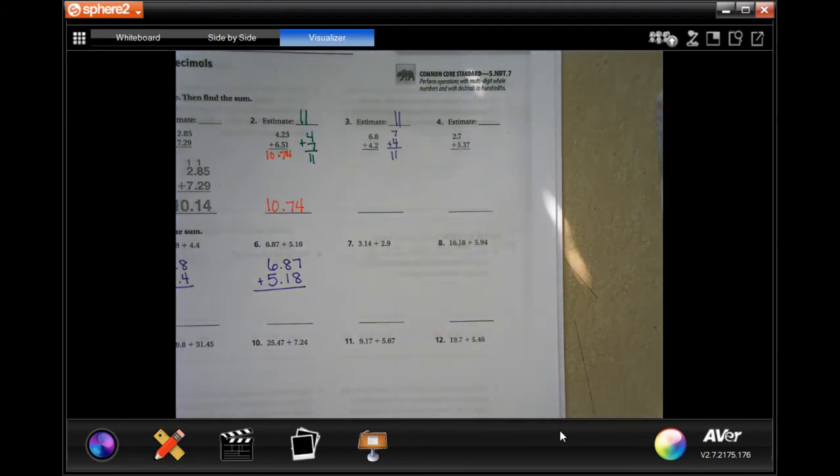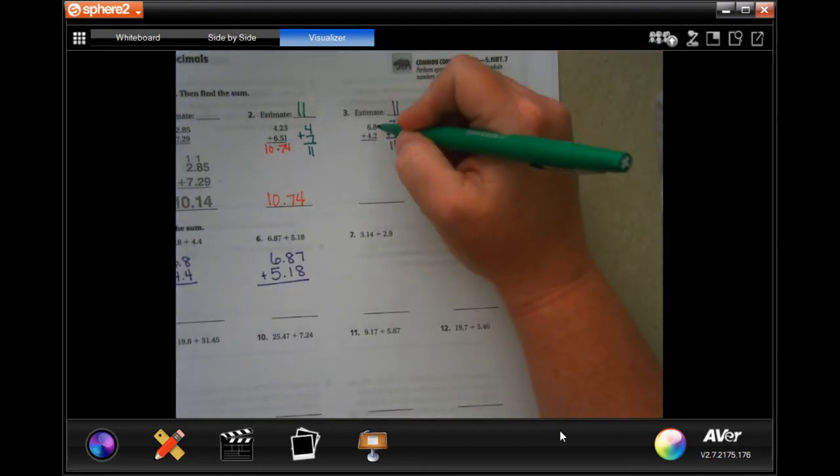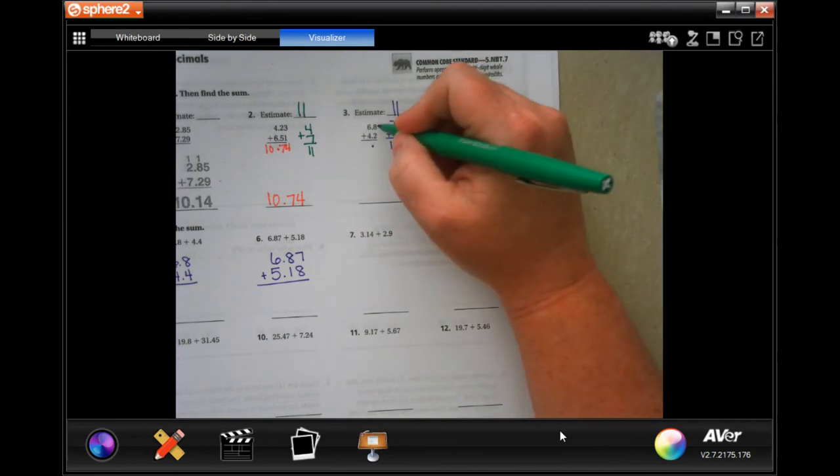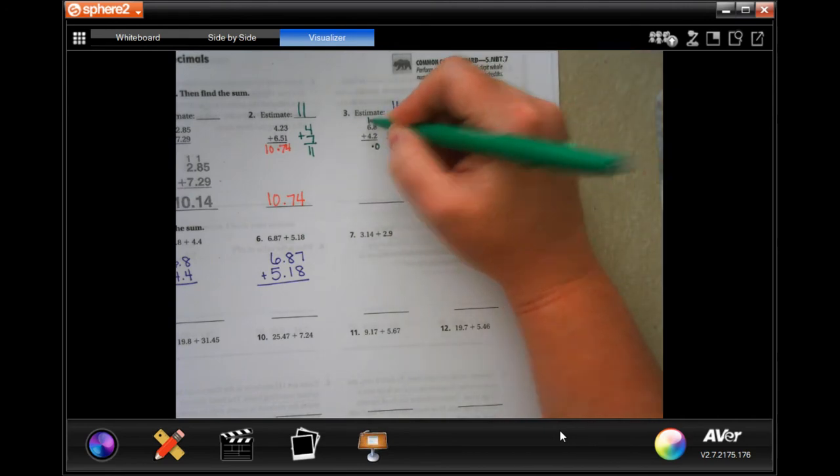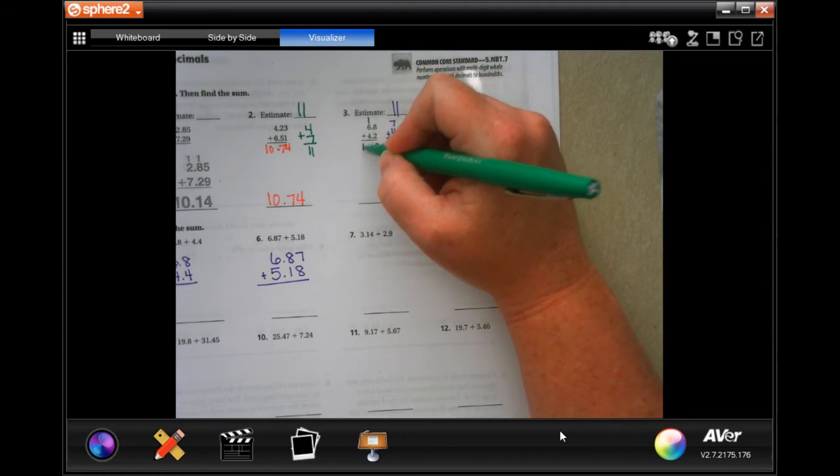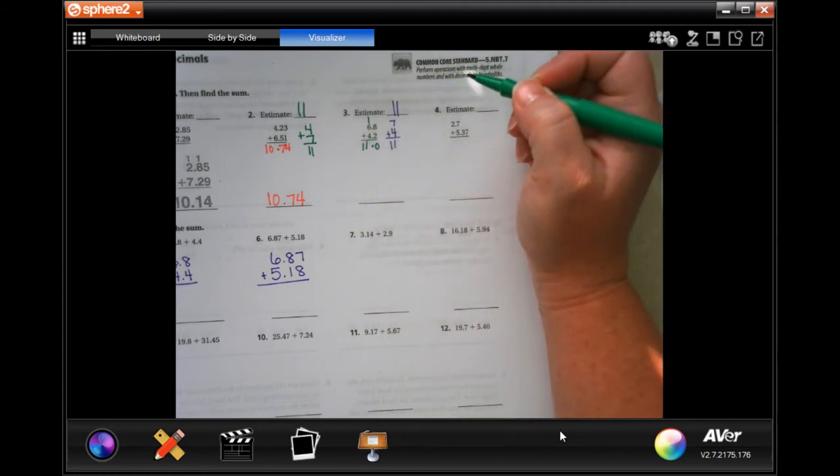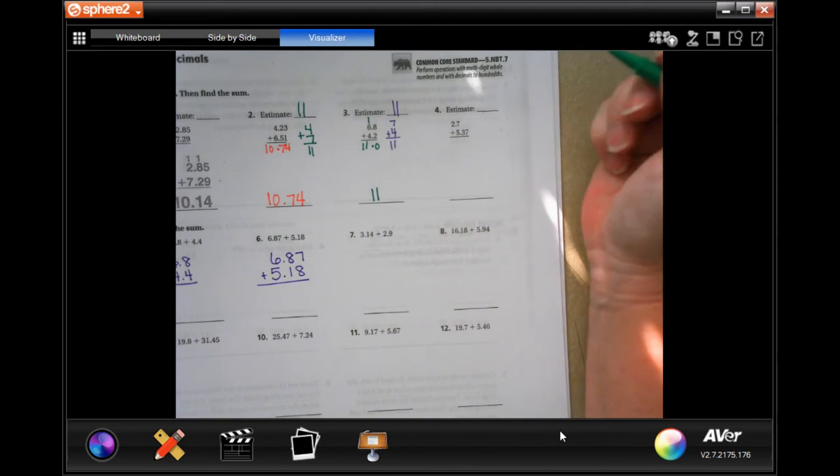Now we're going to do the actual math here. We're going to drop our decimal down. 8 plus 2 is 10, carry our 1. 1 plus 6 is 7, plus 4 more is 11. Look at that, 11 even.